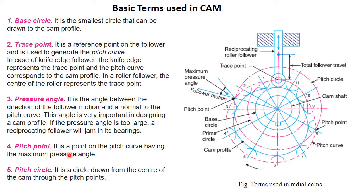The fourth term is the pitch point. It is the point on the pitch curve having the maximum pressure angle. The cam curve and pitch curve have different pressure angles at every point, and the pitch point is the point where the pressure angle is maximum.